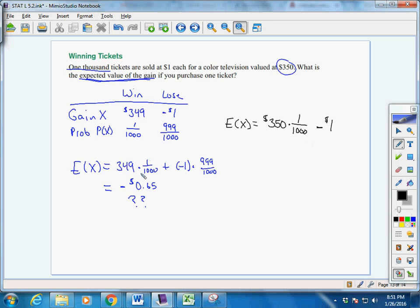Let's say our gain is $350, our TV, times our probability of winning it, 1 out of 1,000. When we do that, then when we're all done, subtract off the dollar that we bought the ticket with.